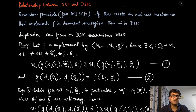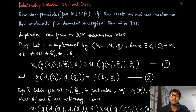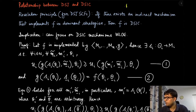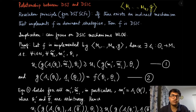That result is known as the revelation principle. Here we are going to define the revelation principle for dominant strategy implementable social choice functions, and later we will see a different version for other types of implementability. It says that if there exists an indirect mechanism — those message spaces m1 to mn with decision rule g — that implements f in dominant strategies, then f is DSIC. The implication is that we can without loss of generality focus only on DSIC mechanisms.